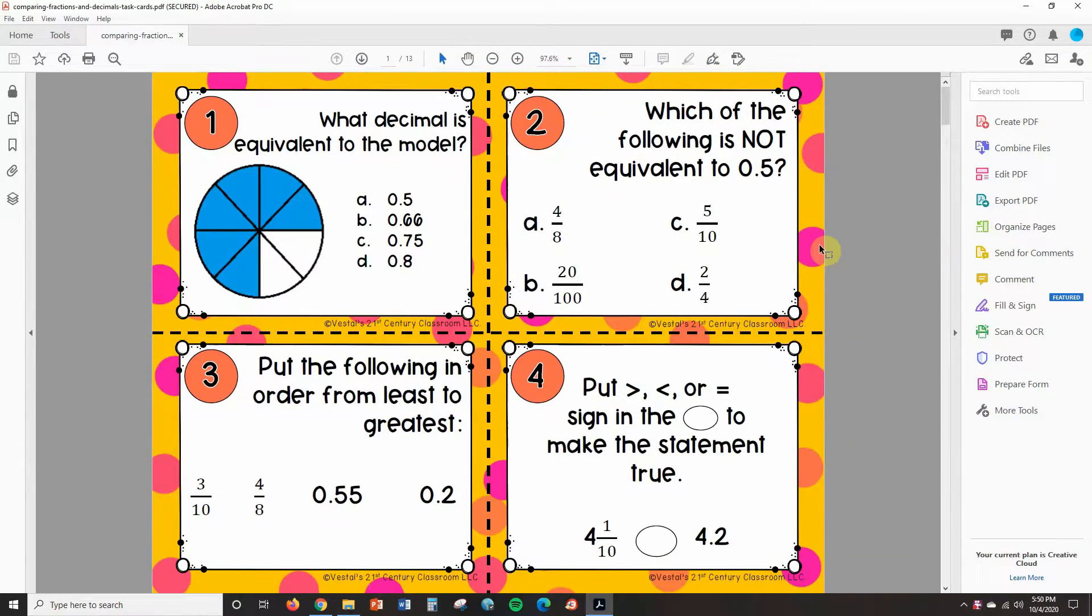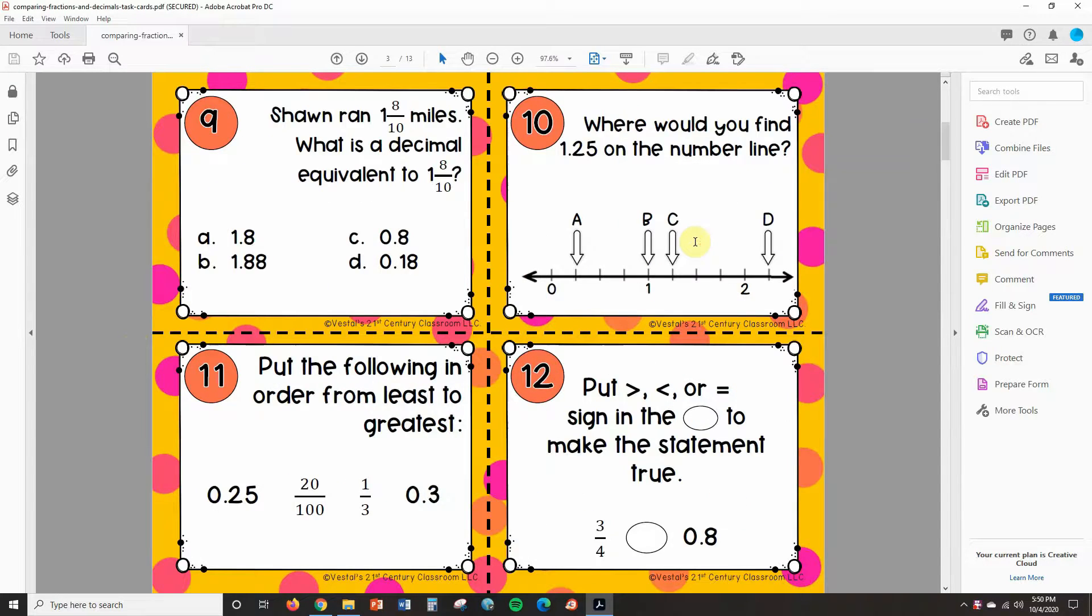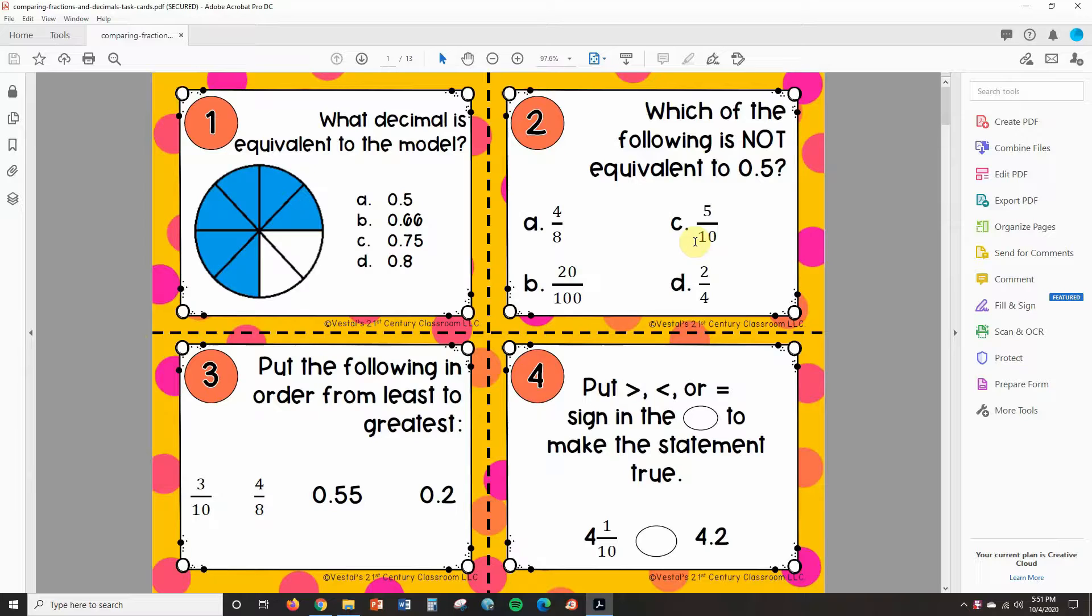Okay, so these are some comparing fractions and decimals task cards that I have created and I want to convert these into digital task cards. So the first thing that I need to do is I need to get an image of each task card.